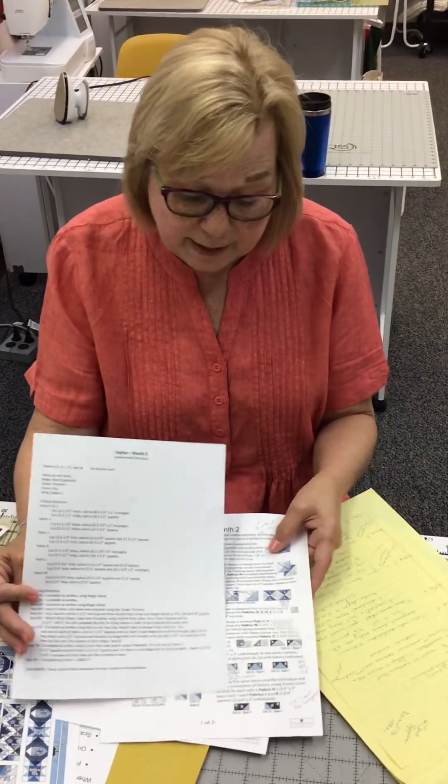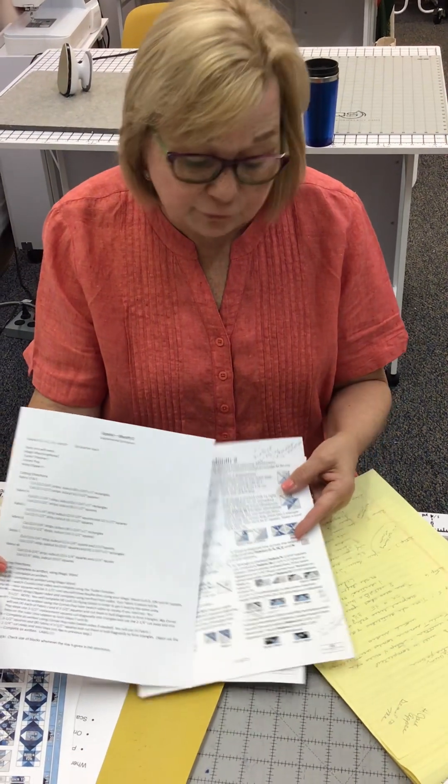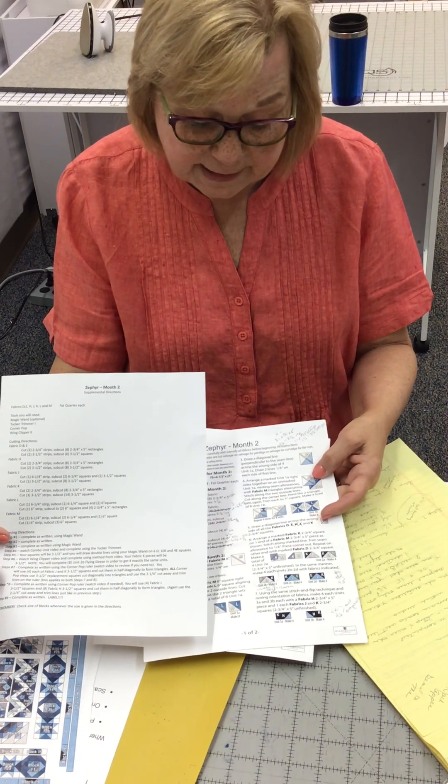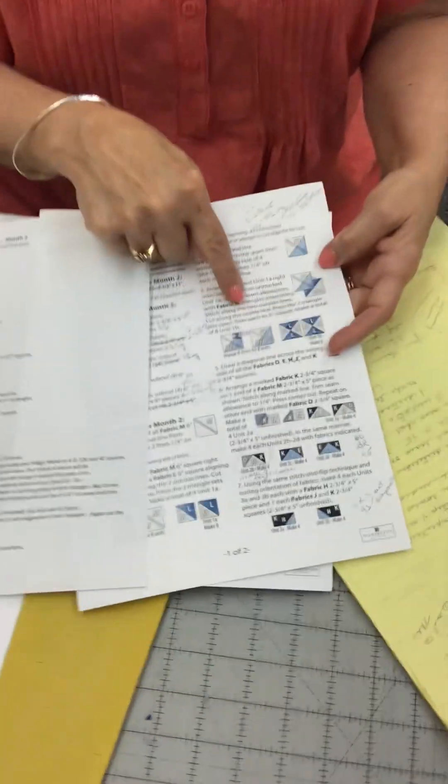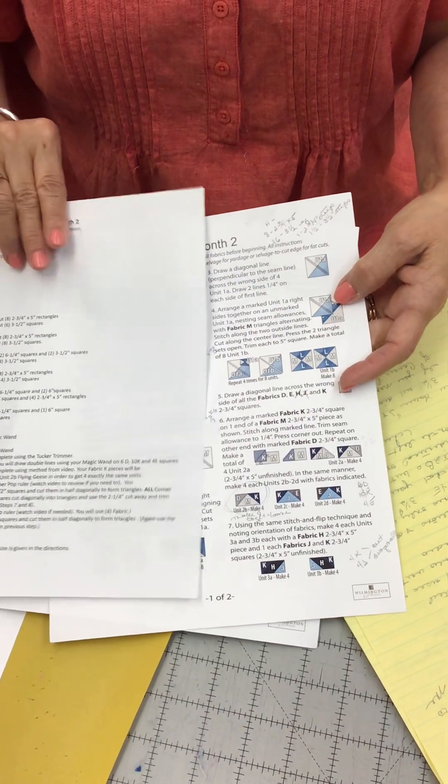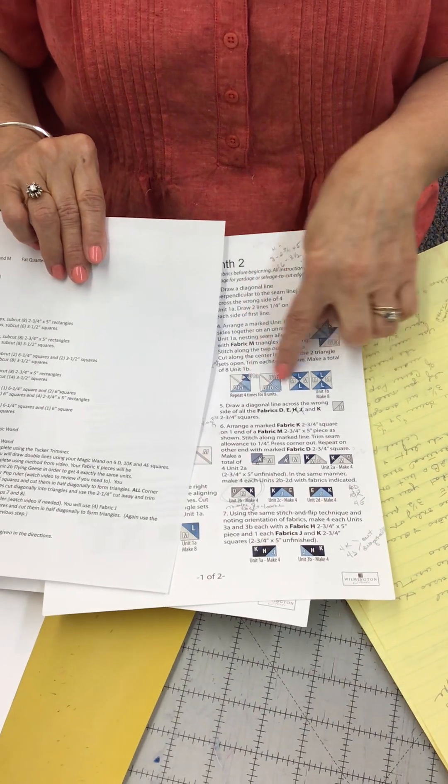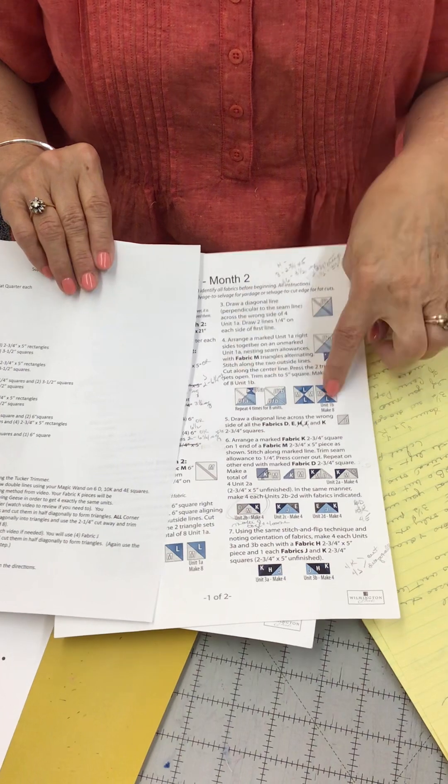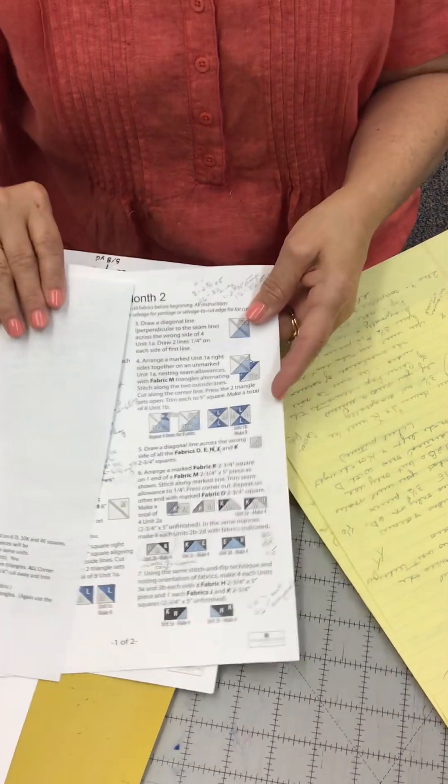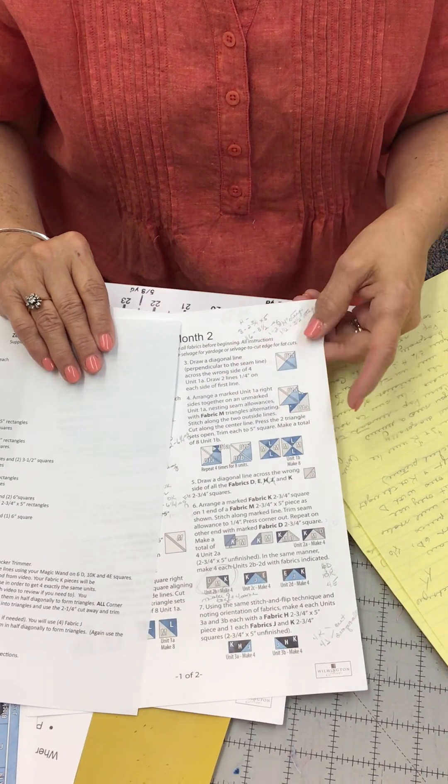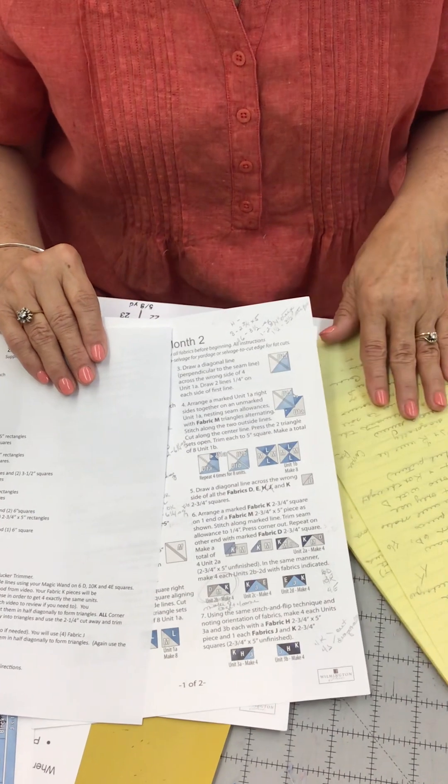The first three steps, you'll be doing them just as they're written. But in step four, you'll use the Tucker trimmer to trim it down to the correct size. And remember, it tells you what size. It says trim each to five inches. And then it tells you how many of each unit you'll end up with. And that will be the same always. You'll always end up with the same number of units. So that's step four. That's combination units. You will watch a video. There's a video on our website about combination units.